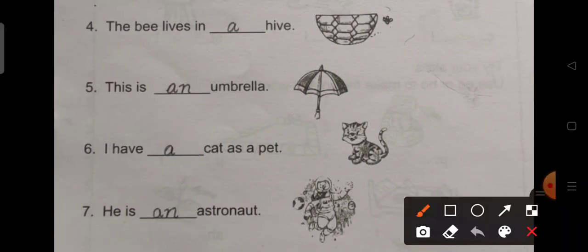Number 4. The bee lives in dash hive. The bee lives in a hive. The word hive begins with a consonant sound. So we will use the article a with it.